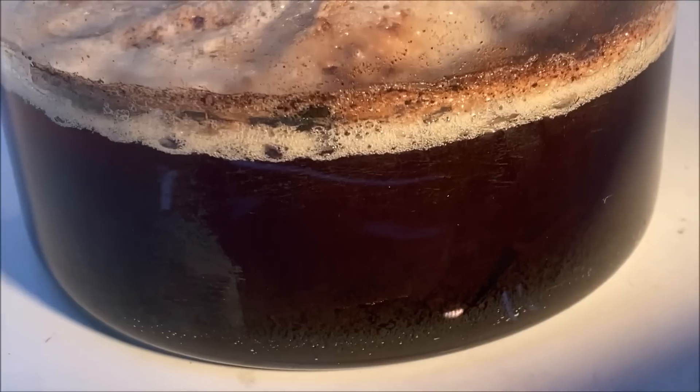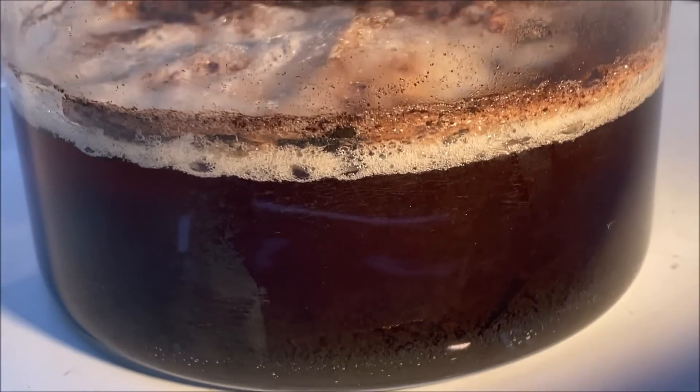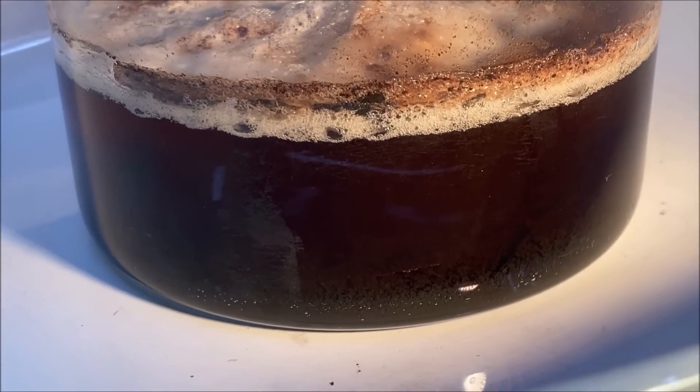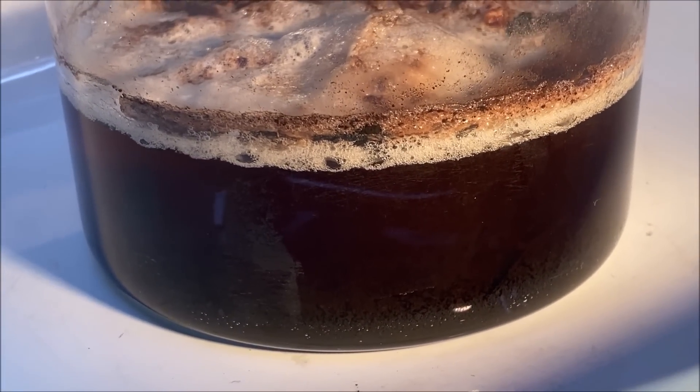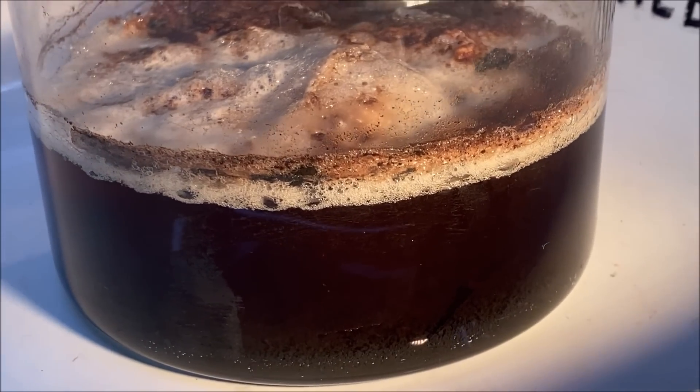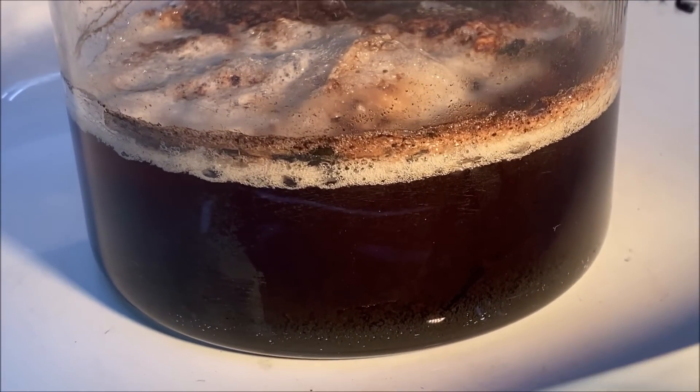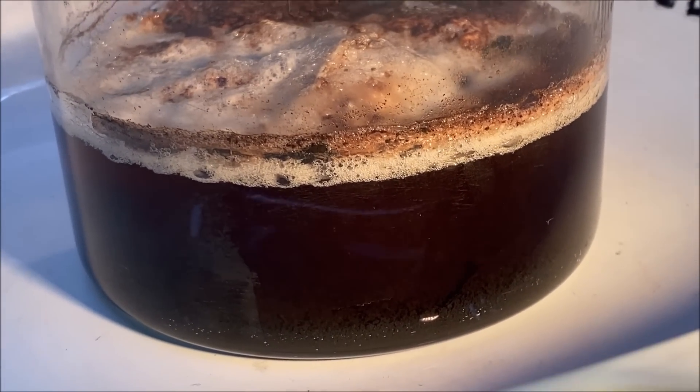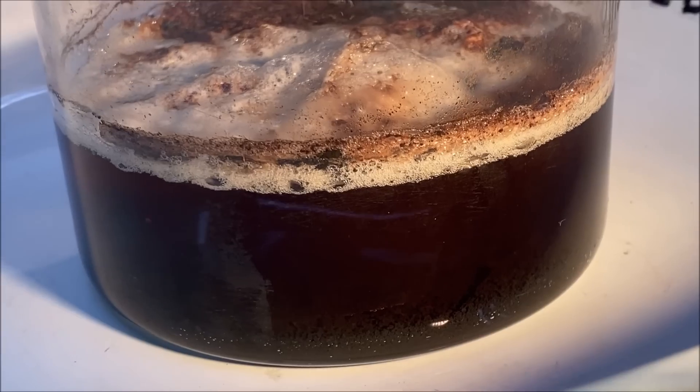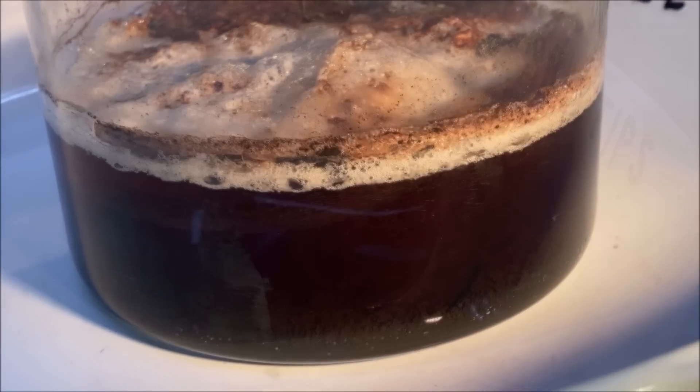But if you notice the color of the solution has turned back to an amber, red, brown color. That means that some of the metals have gone back into solution. This is one of the baffling features of platinum group metals. If you leave them set in that solution they will want to go back into solution, redissolve.